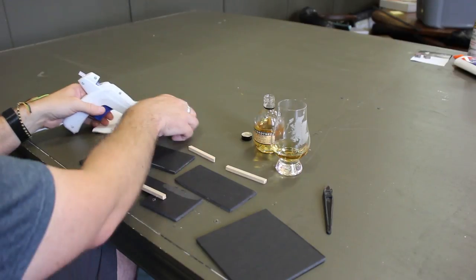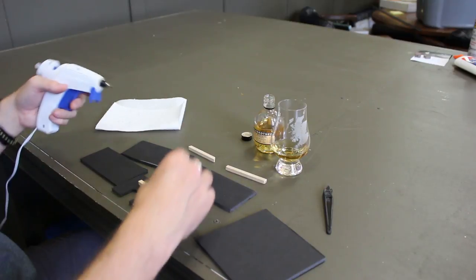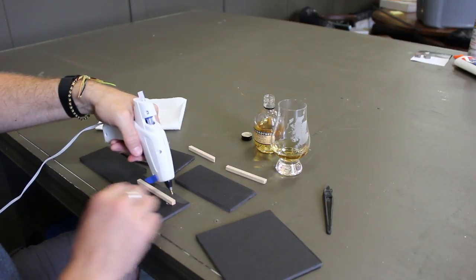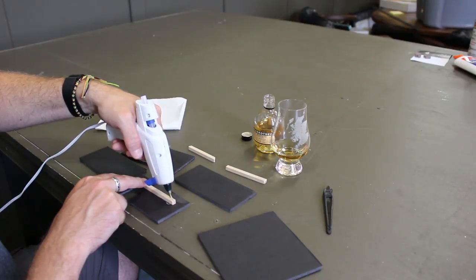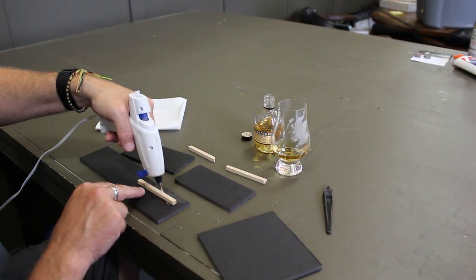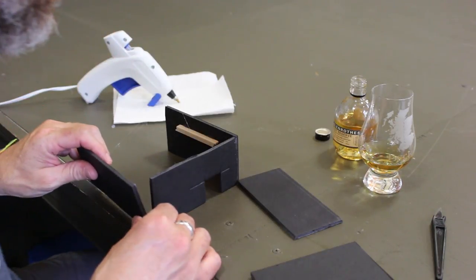After you've determined what size building you want to make and you've pre-cut all your walls, you want to glue in some balsa strips on the back side of the building, and that will hold up and support the roof. Then once they're dry, I go and start gluing the walls.